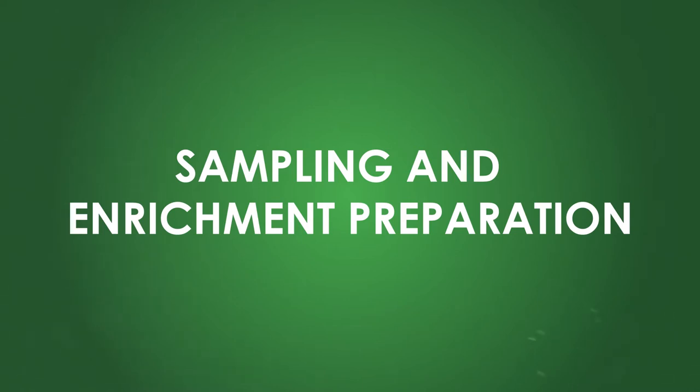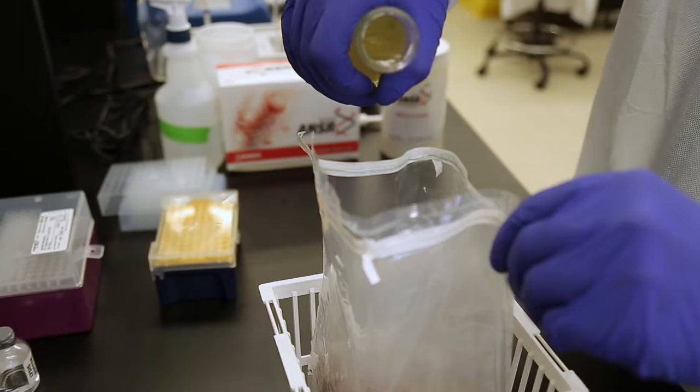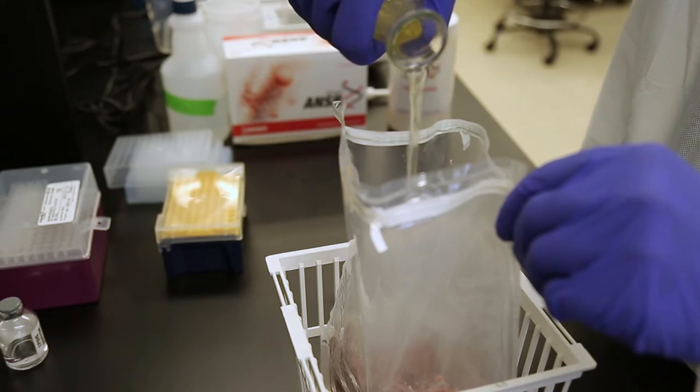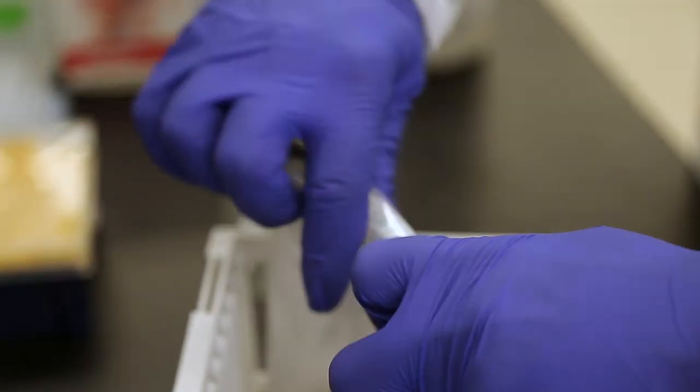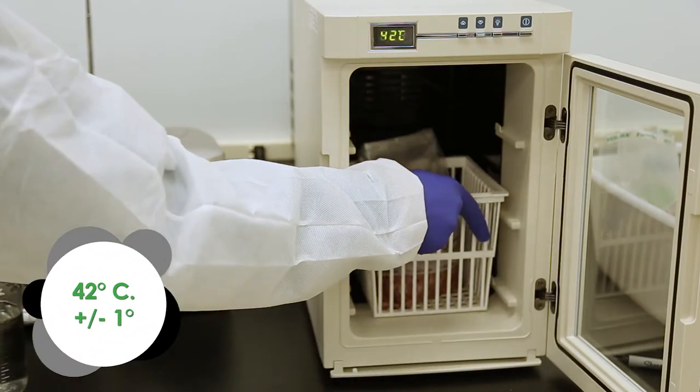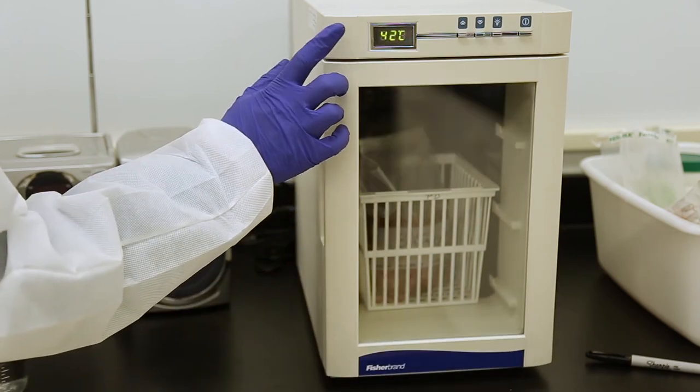Sampling and Enrichment Preparation. This video demonstrates the procedure using raw ground beef and environmental samples with Neogen's Answer for E. Coli Enrichment broth media. Weigh out the appropriate amount of sample and rehydrated media into a sterile stomacher bag as seen in the chart. Close up the stomacher bag as shown and incubate at 42 degrees Celsius plus or minus one degree for the amount of time listed in the kit insert.